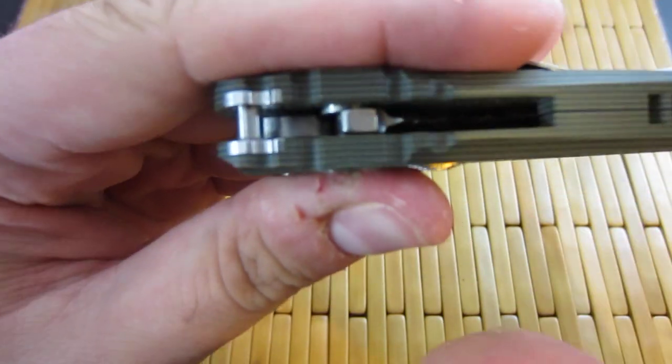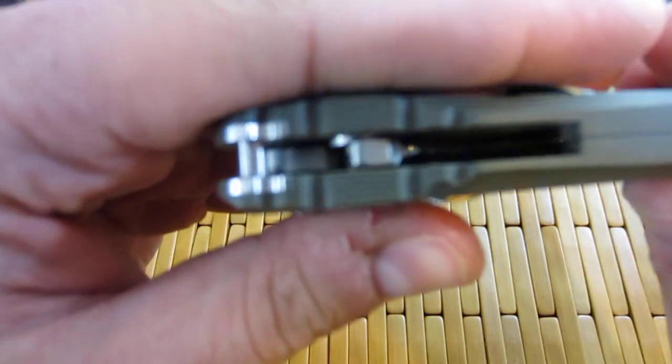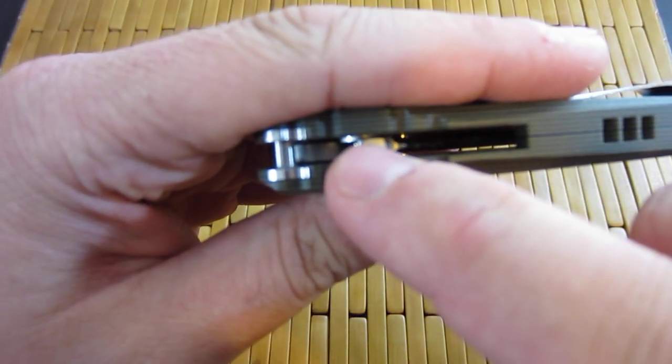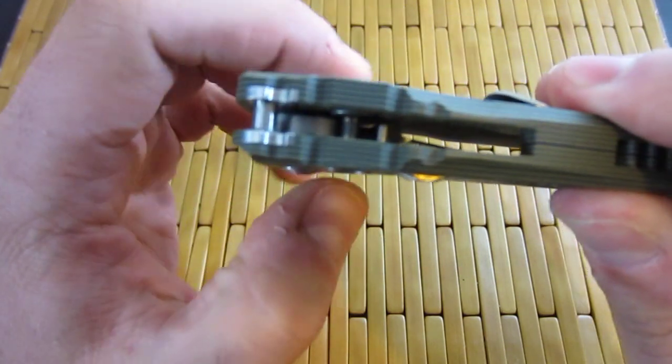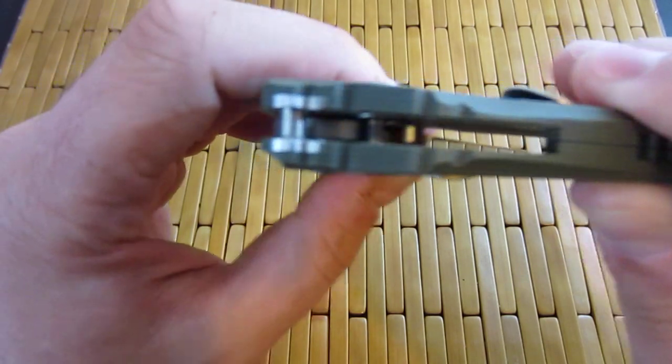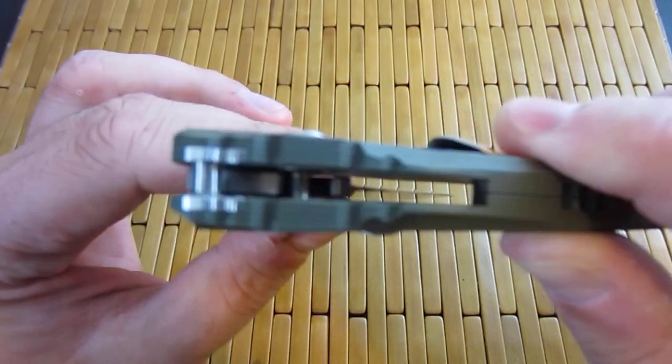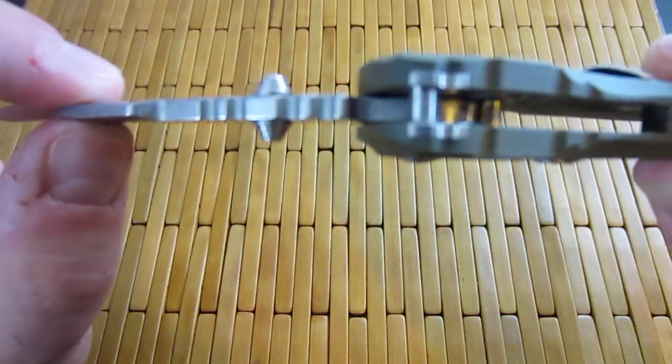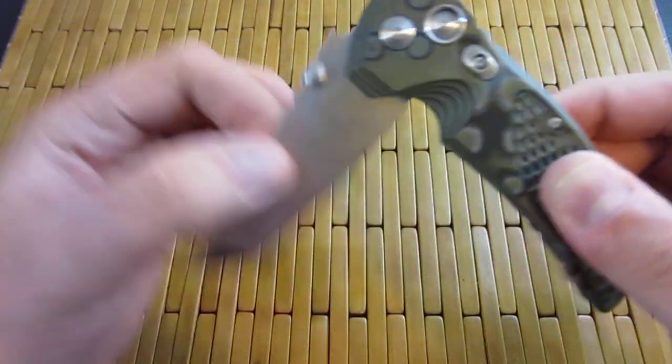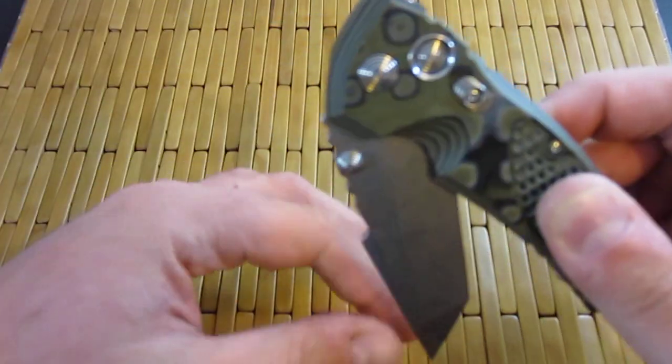That's how the detent works on a button lock. Button locks are very smooth because there's not a lot of surface area. Once the blade starts to move, there's very little of this drum actually touching the tang. That means very little pressure is dragging the blade, making for a nice smooth yet secure action.